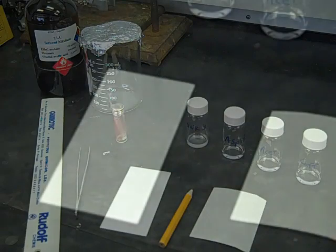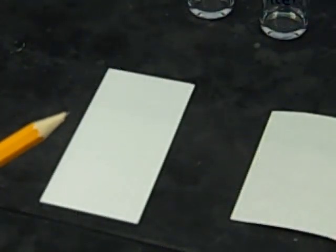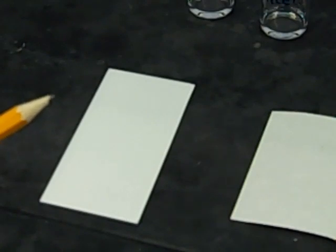All the markings we make need to be in pencil. If you make markings in pen, then all the dyes and binders and everything in that ink are going to separate out and make a mess on your plate. Use pencil, which is made of graphite.